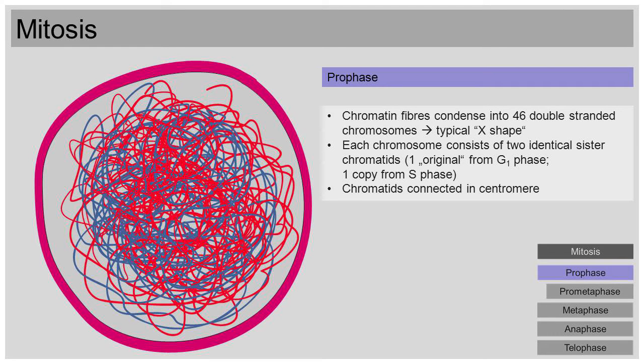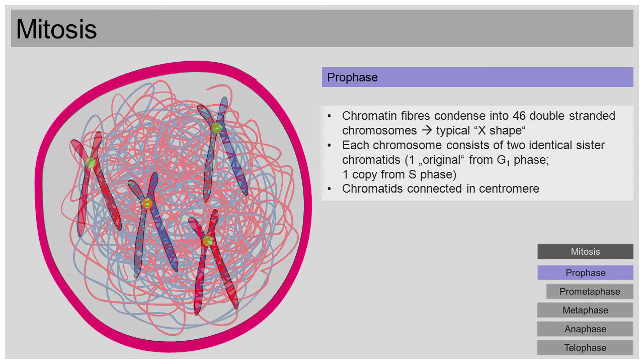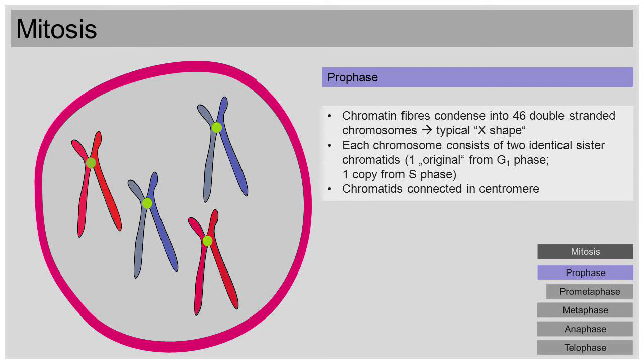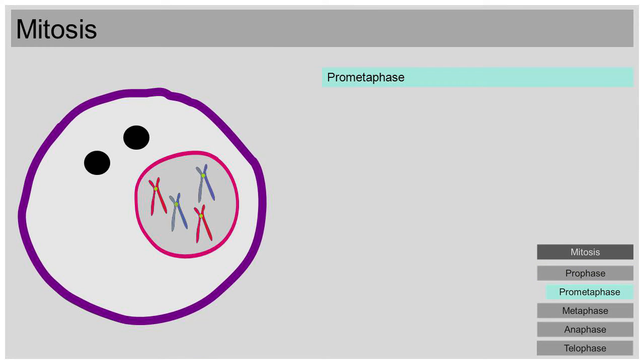At the end of prophase, the nucleus looks something like this. In the human nucleus, there are of course not only 4 but 46 chromosomes. But you surely understand that we only drew 4 to keep it simple. Prometaphase is next. No. Well, theoretically you're right, but it would be best to explain the centrosome first.